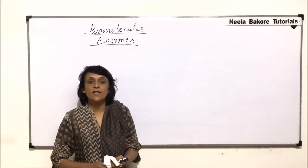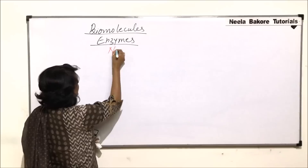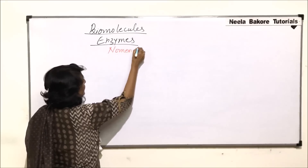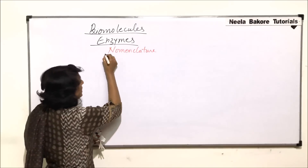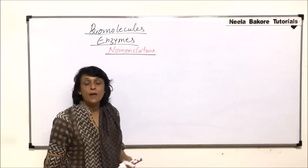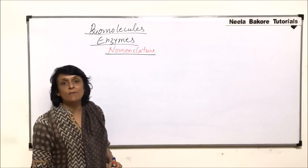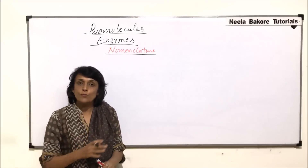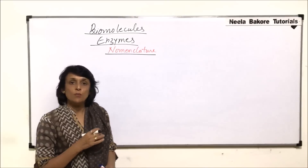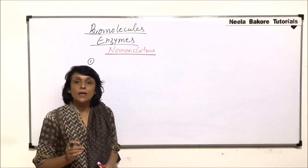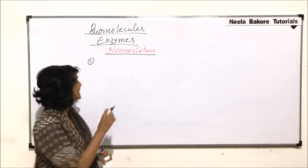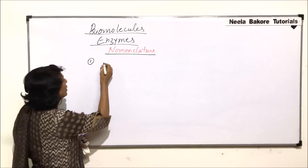In this section we will take up nomenclature of the enzymes. Nomenclature means naming system. There are various ways in which enzymes have been named. We will take some old methods and then come to the most recent method. The first and old method was putting a suffix '-ase' to the root word.